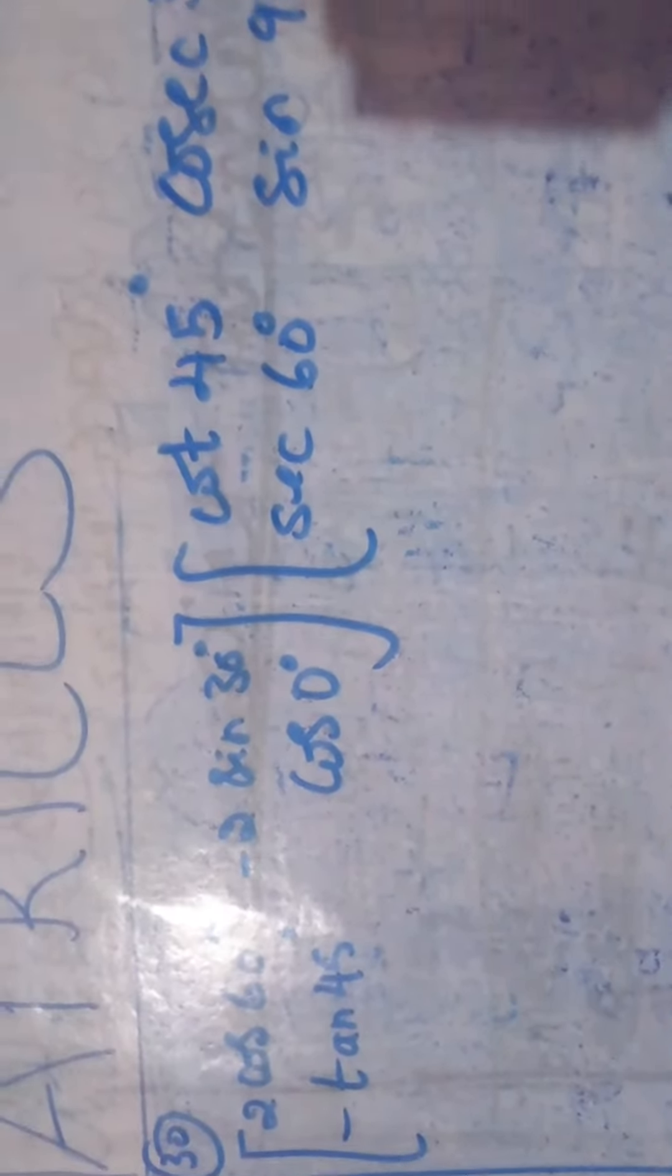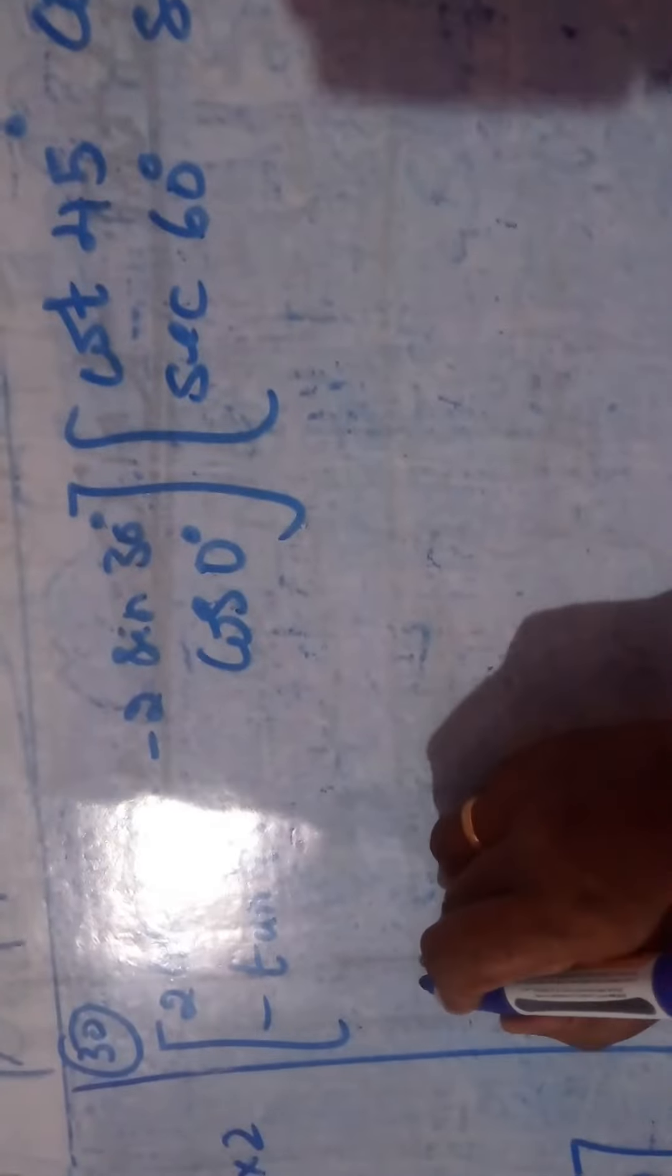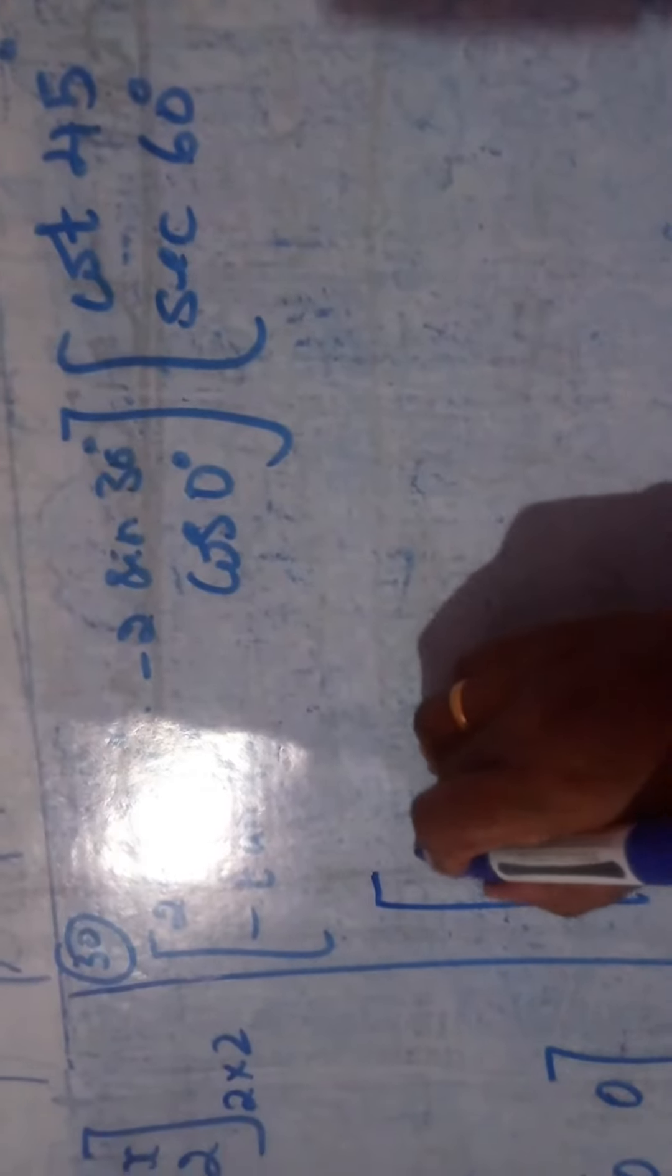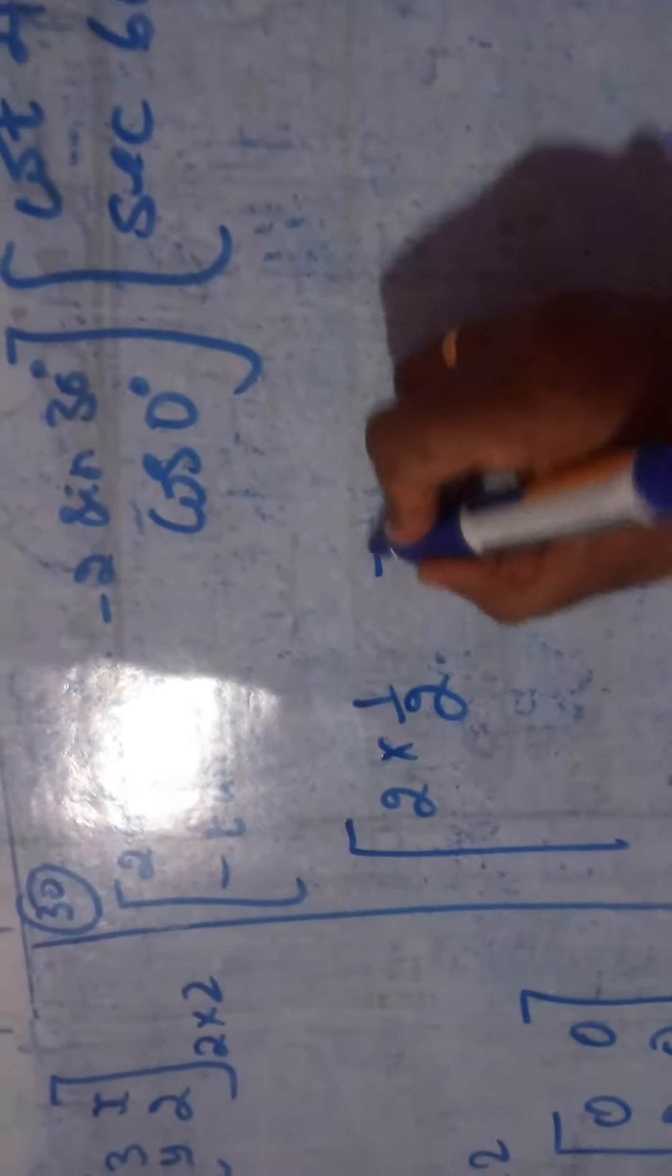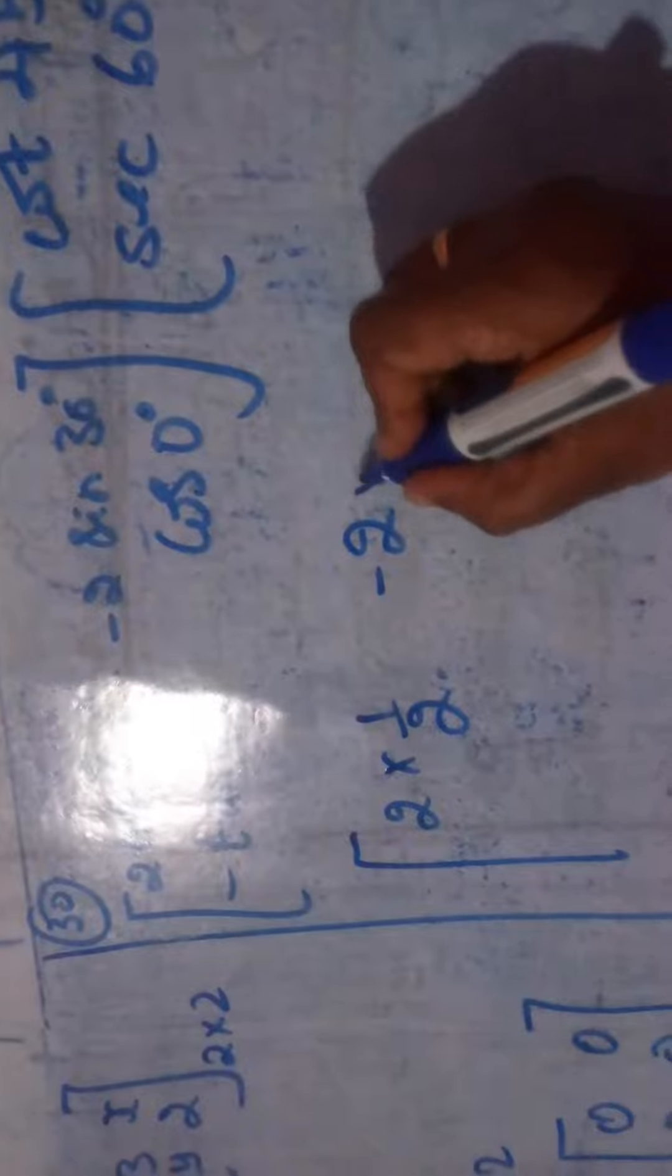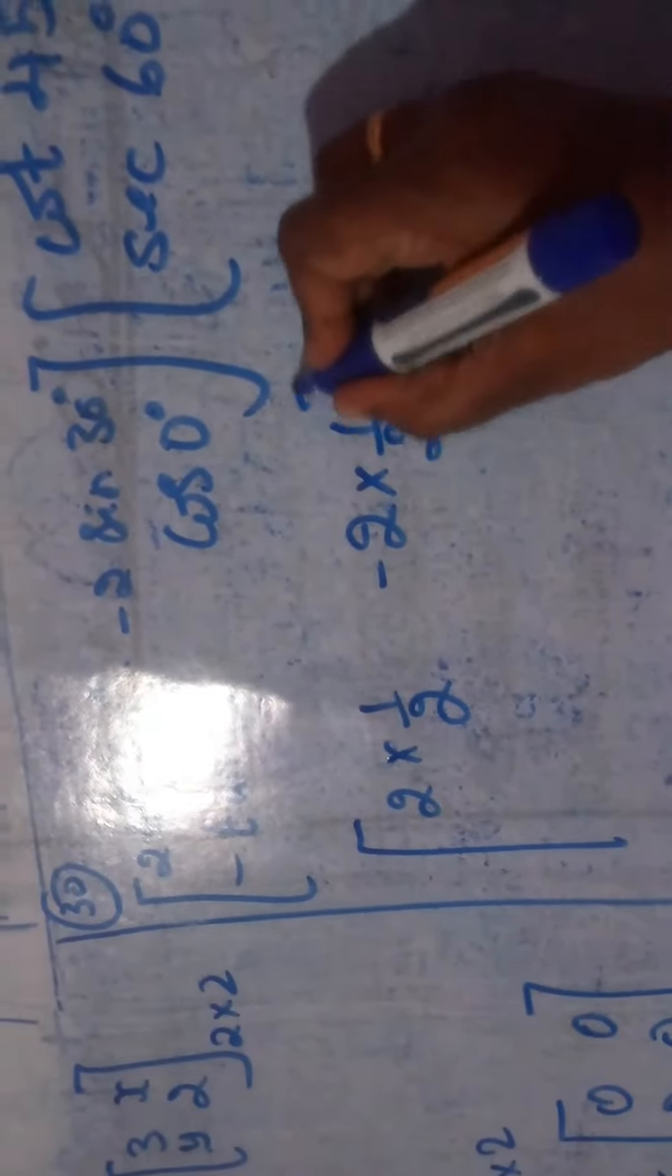Now here this is 2 cos 60. Cos 60 is 1 by 2. Minus 2 sine 30, which is also 1 by 2.